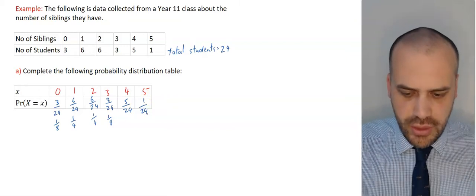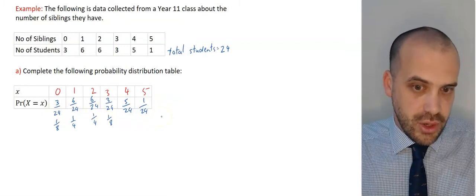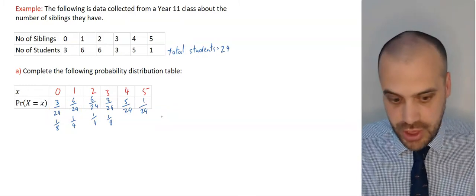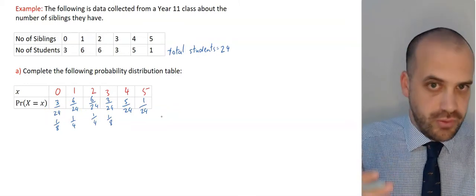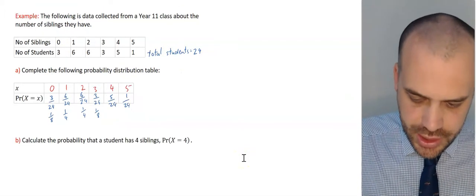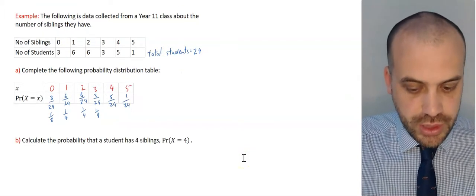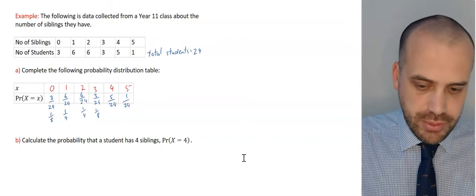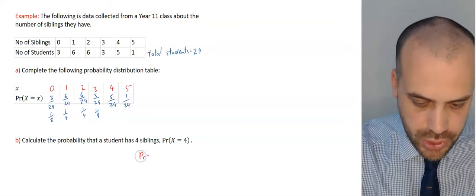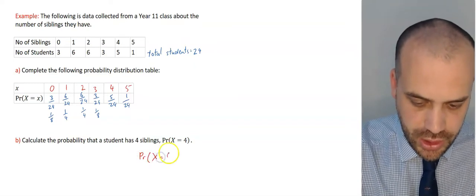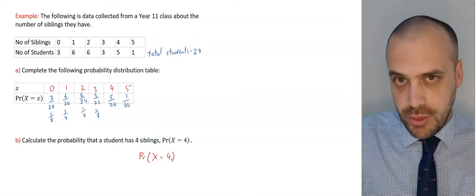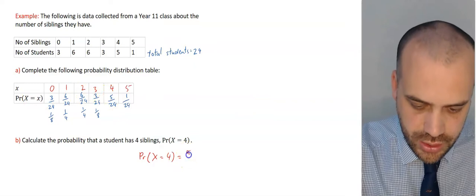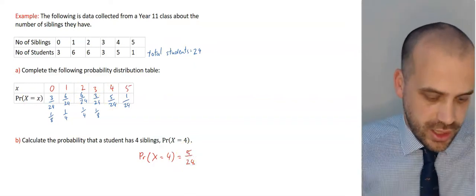If we take all of these probabilities and add them together, we would hope the answer is 1 — and it is — because that's required for a discrete random variable distribution. The first type of question you might get asked is: calculate the probability the student has 4 siblings, P(X = 4). This is simple — we just read it off the table. The probability that the random variable equals 4 is 5 in 24.